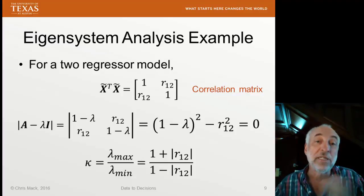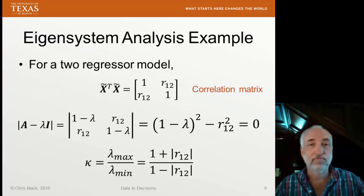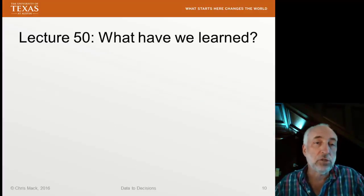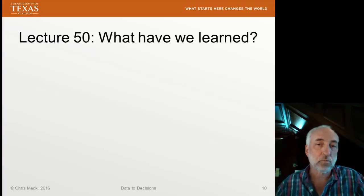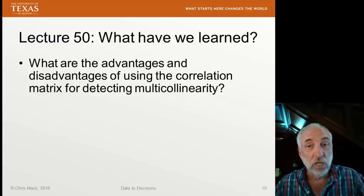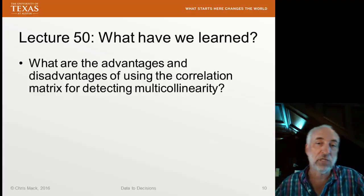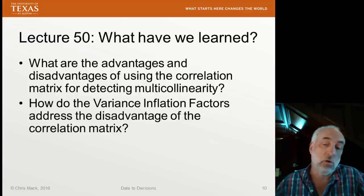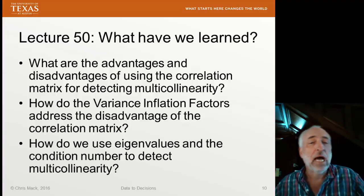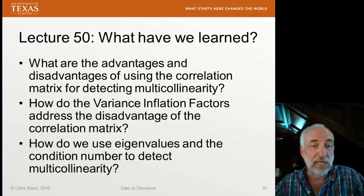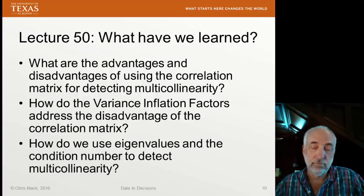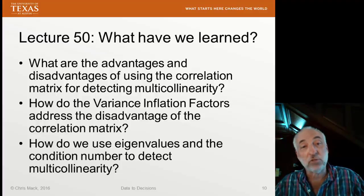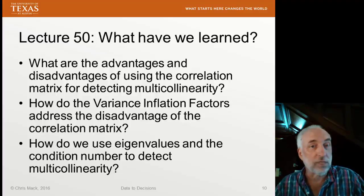As I've said, we're going to use this eigensystem analysis when we deal with multicollinearity in a future lecture. What have we learned in Lecture 50? You should be able to quickly and easily answer these questions: What are the advantages and disadvantages of using the correlation matrix for detecting multicollinearity? How do the variance inflation factors address the main disadvantage of using the correlation matrix? And finally, how do we use the eigenvalues and the condition number to detect multicollinearity? Next time, we'll talk about some strategies for addressing multicollinearity once we've detected it. Until then.